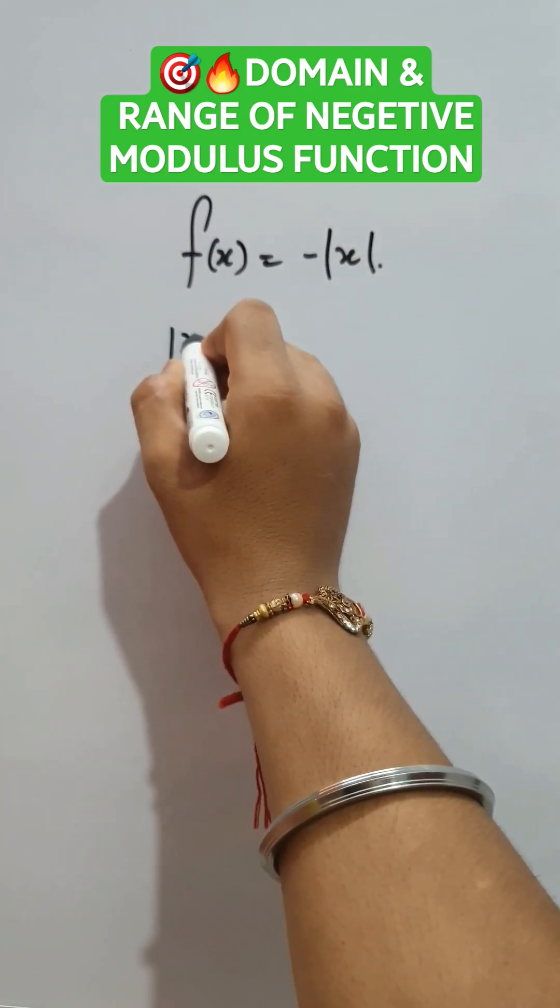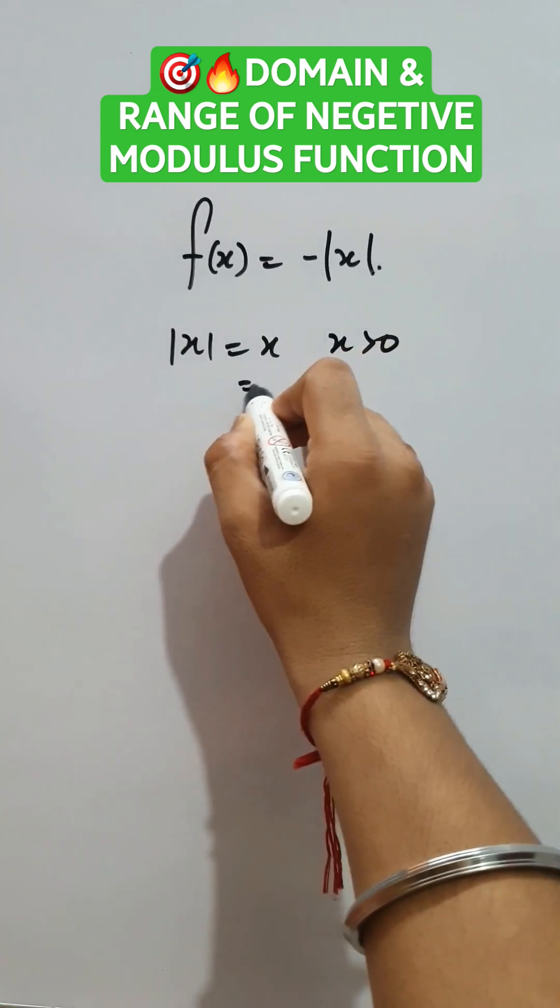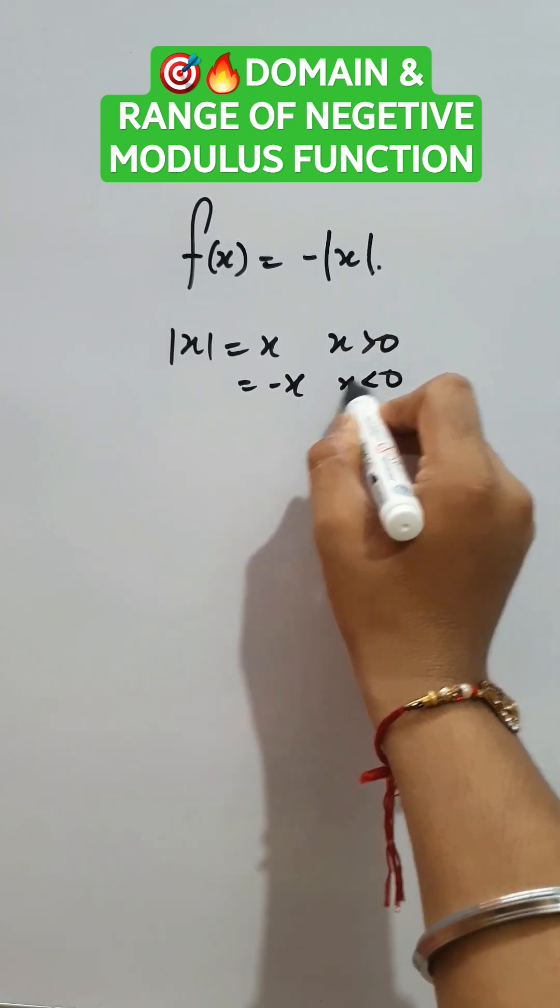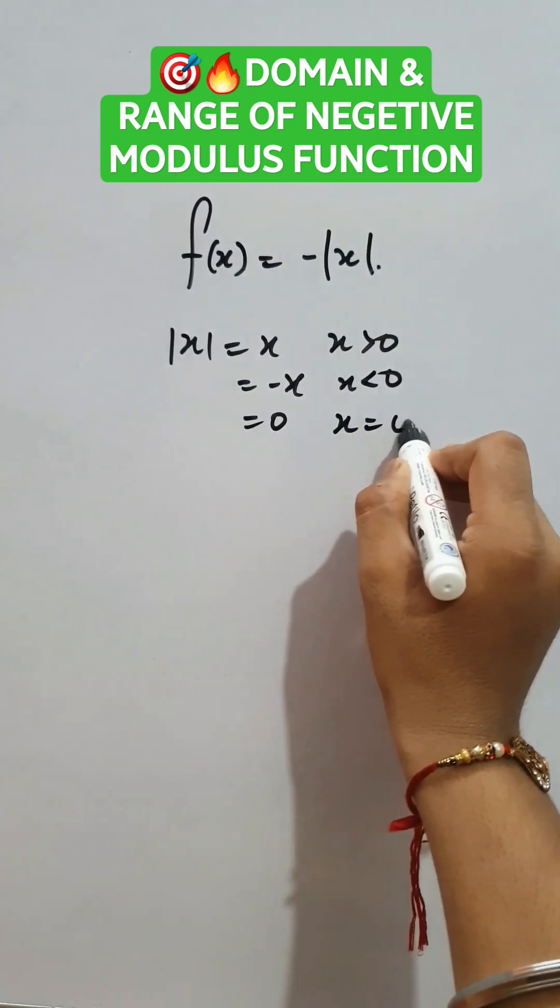So first of all, we know that mod x equals to x whenever x is greater than 0, is equals to minus x whenever x is less than 0, and equals to 0 whenever x is equals to 0.